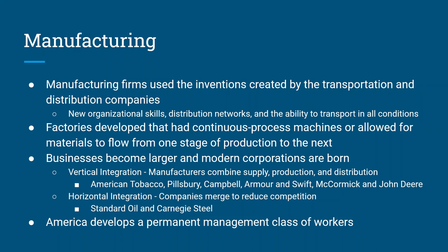Businesses become larger and larger between the end of the Civil War and 1900, and there are two different ways these corporations are born. The first is vertical integration — manufacturers combine all different parts of the process: supply, production, and distribution all together. Then you have horizontal integration, where companies merge together to reduce competition by buying out their competitors. With these corporations getting bigger, the United States starts to develop a permanent class of workers.